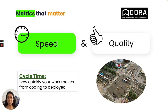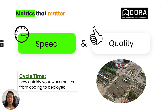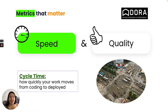Cycle time is our first metric — how quickly your code moves from coding state to deployed state. Think about moving a car from point A to point B: if you can do it fast, your speed is high. The same applies to code delivery: if you are able to move your code from coding state to production, you are delivering at high speed regardless of the type of vehicle you're using.